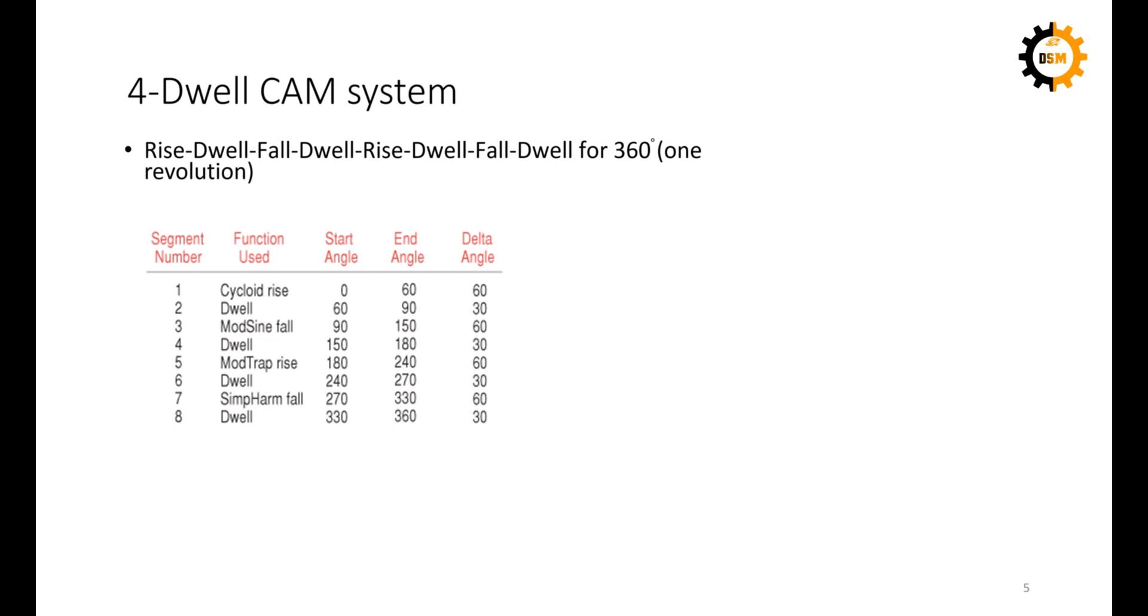So this is an example of a four-dwell CAM system, and this example has four dwells in it. So basically, this is a type of CAM profile in which you have the critical extreme positions. It has eight segments in it, and if I mark them, there are two, four, six, and eight dwells. That's why this is known as four dwells. And between these four dwells, there are some different types of functions used. In the first segment, it is cycloidal modified sign, the second one, then there is modified trapezoid rise and simple harmonic fall.